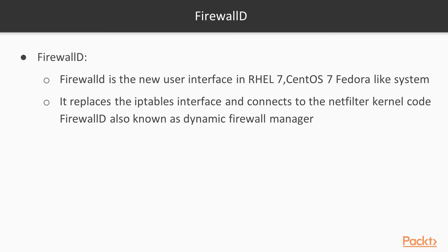FirewallD is also known as dynamic firewall manager. FirewallD is the new interface in Red Hat 7, CentOS 7, and Fedora-like systems. It replaces the IPTables interface and connects to the netfilter kernel code. FirewallD provides a dynamically managed firewall with support for network filter zones to define the trust level of network connections or interfaces. Zones are pre-constructed rule sets for various trust levels.